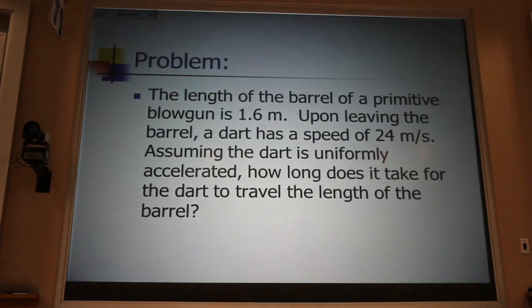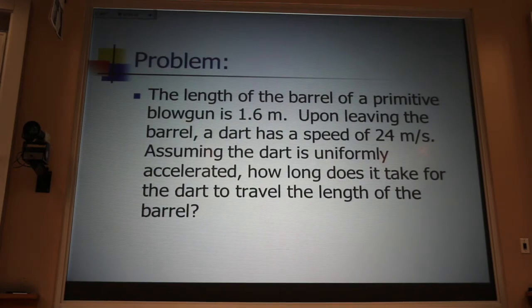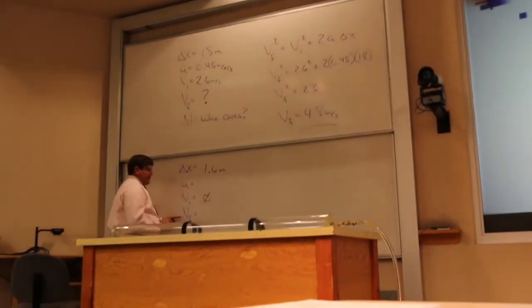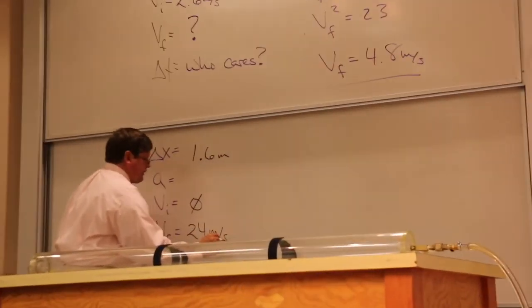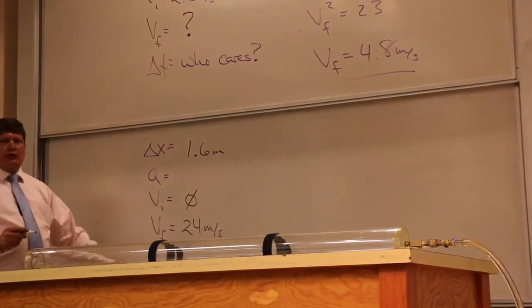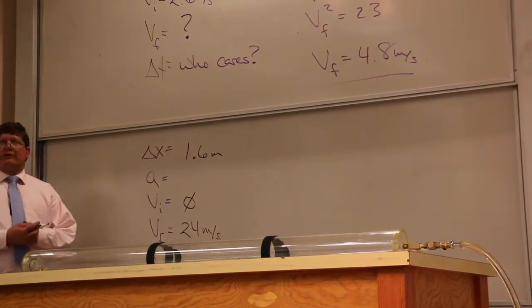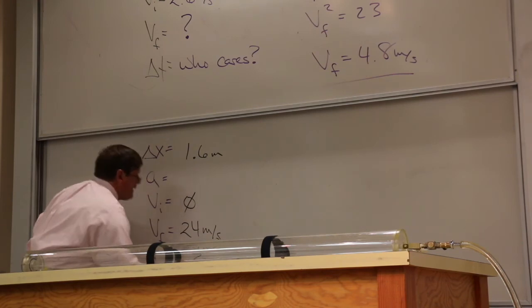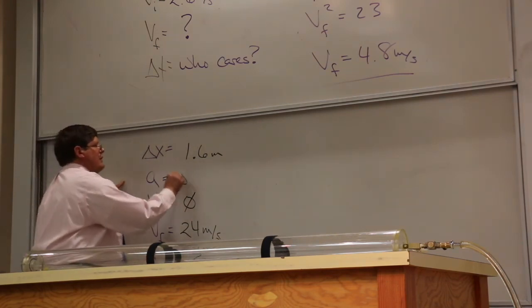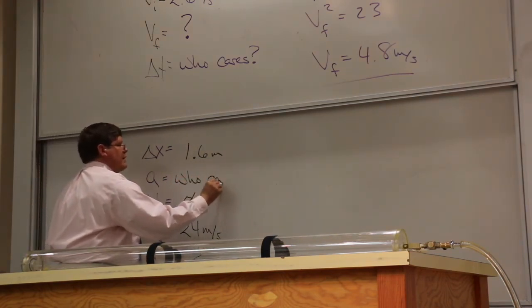We know that the dart travels a distance of 1.6 meters, and it starts from rest, and it has a final velocity of 24 meters per second. That leaves two empty spaces, one of which is worth an A in the class and a chance to go to medical school, the other one we don't care about. Now, in this problem we're asked for the time, that makes the acceleration the who cares.